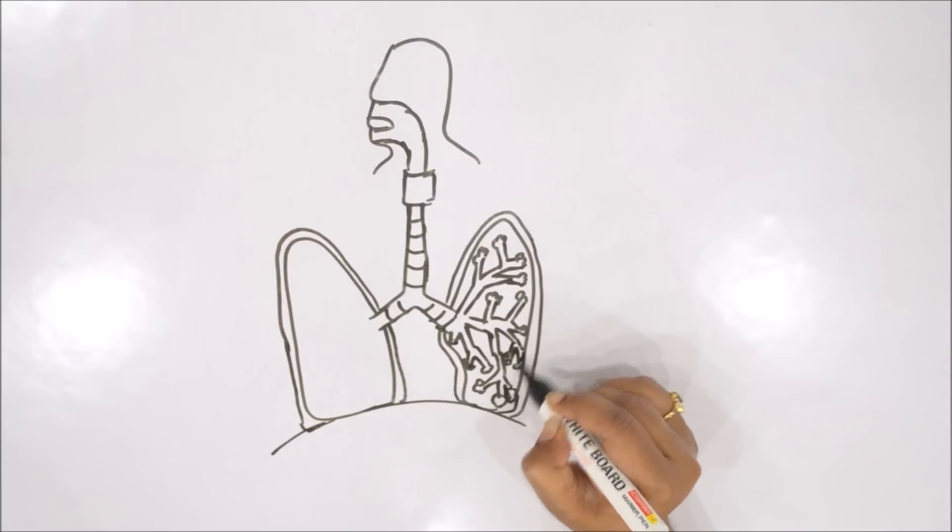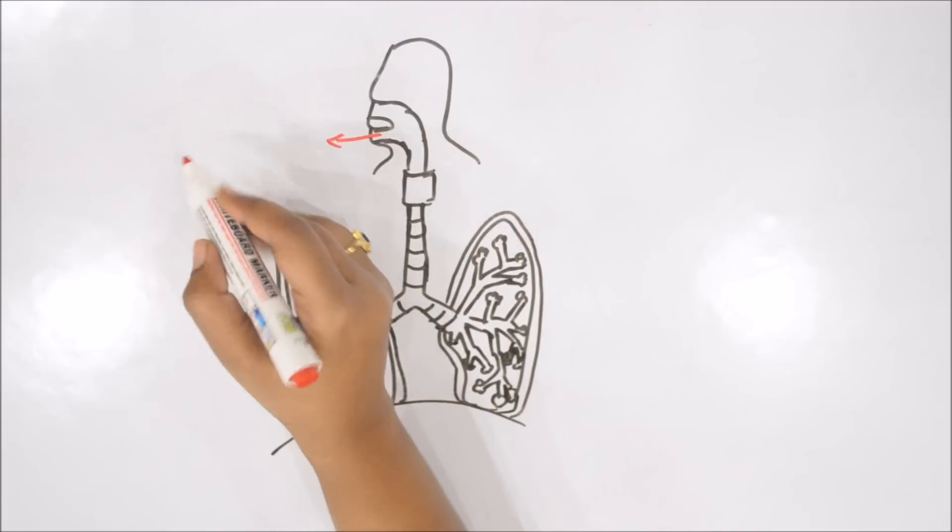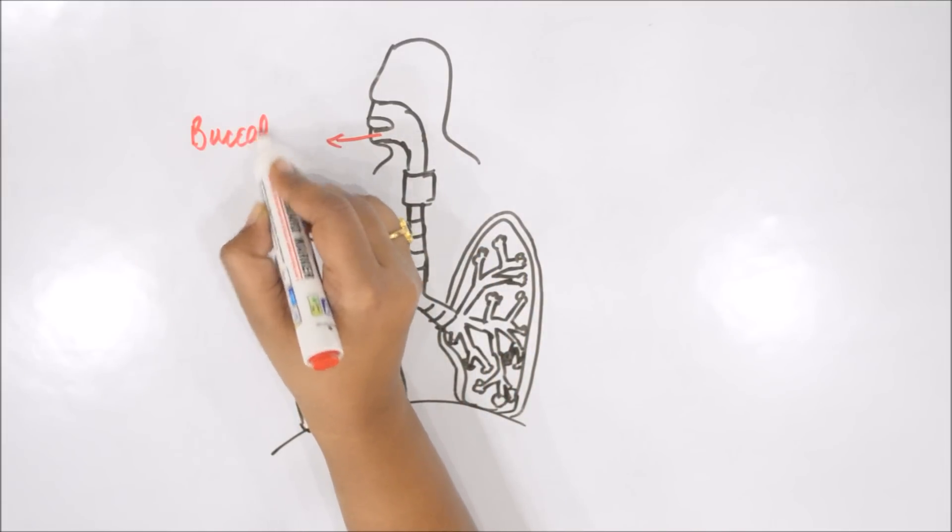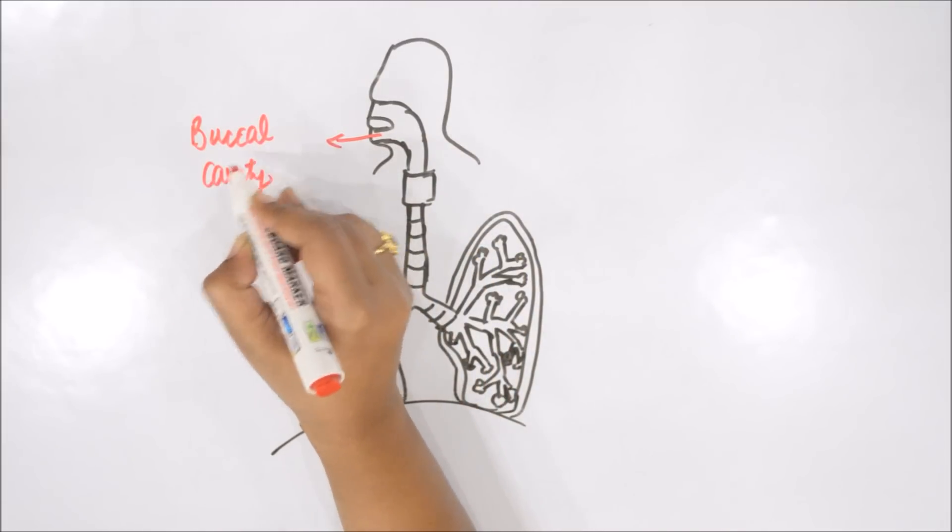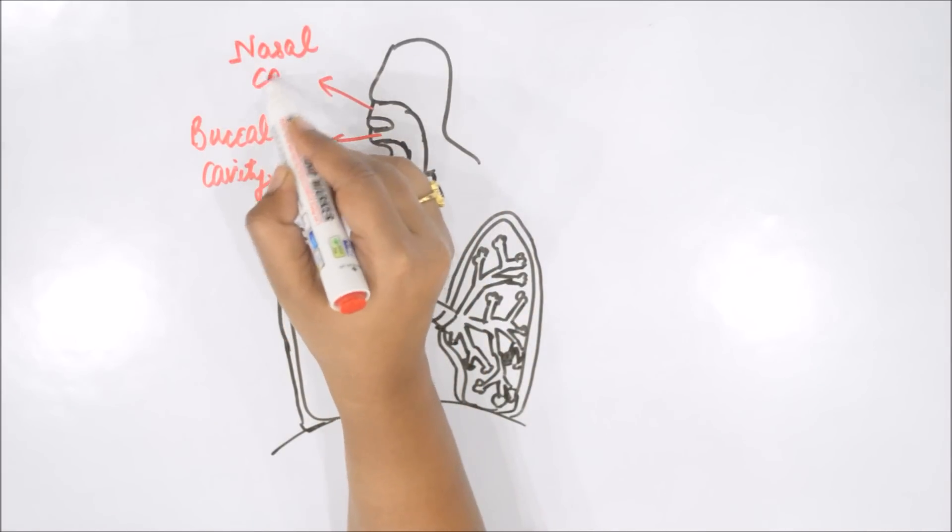Yes, this is alveoli. So let's see the labeling part. The lower one is buccal cavity, the place where food enters. Buccal cavity. Upper one is your nasal cavity containing hairs on it, the place where air enters.